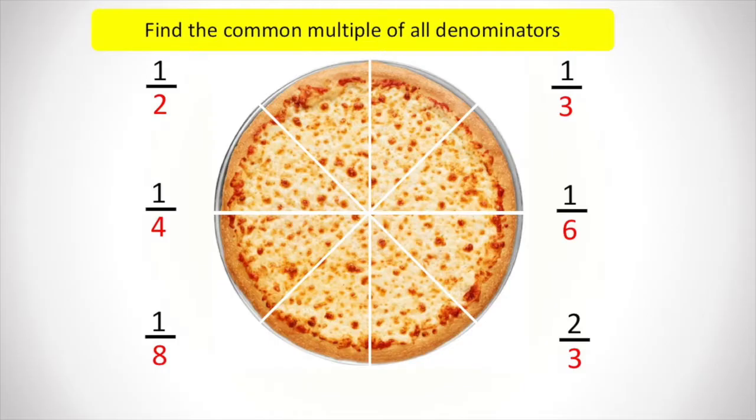So in this case, we are looking at two, four, eight, three, six. And if you look at their multiplication tables, the number 24 is a common number that is seen in all of them. That's the lowest common multiple. In this case, it would be 24.